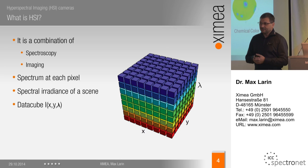So, hyperspectral imaging — what is it all about? For those who already know, you will need to hear that again; for those who are hearing it for the first time, I hope it will be useful. Hyperspectral imaging is a combination of imaging and spectroscopy. For regular imaging, each pixel has its value — whether grayscale or red, green, blue components — but for hyperspectral imaging, each pixel captures the full spectrum.